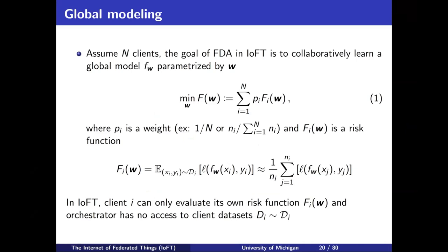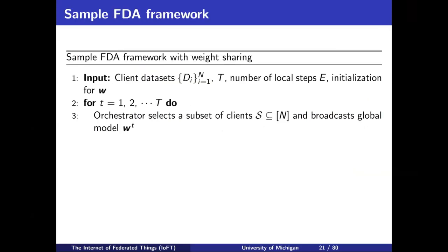The empirical risk function is usually just the summation over data points of some loss function — if you're doing classification maybe it's cross-entropy, for regression perhaps mean squared loss. This is the general objective in global modeling: we try to learn one model parameter w that minimizes the average empirical loss over all clients. Most of my talk today will be under the notion where I have a central orchestrator helping me do the learning.